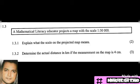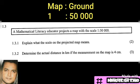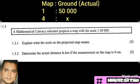Question 1.3.2: determine the actual distance in kilometers if the measurement on the map is 4 centimeters. We use the cross-multiplication method. Write down the scale 1:50,000, where the format is map:actual. The map measurement is 4 cm, and the actual distance is x. Cross-multiplying gives 50,000 times 4, which equals 200,000 centimeters.